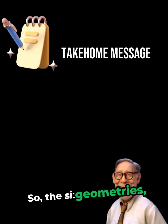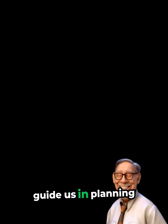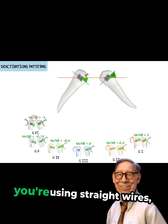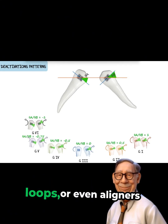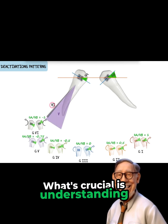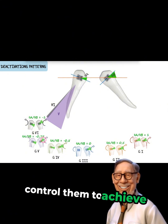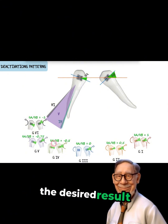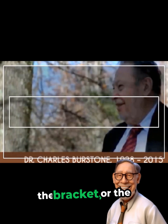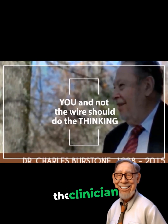The six geometries, along with the principle of equilibrium, guide us in planning and predicting tooth movement. It doesn't matter whether you're using straight wires, loops, or even aligners. What's crucial is understanding the language of forces and moments, and how we can control them to achieve the desired result. Remember the key takeaway: it's not the wire, the bracket, or the aligner that does the thinking — it's you, the clinician.